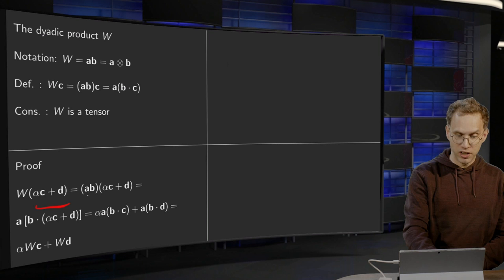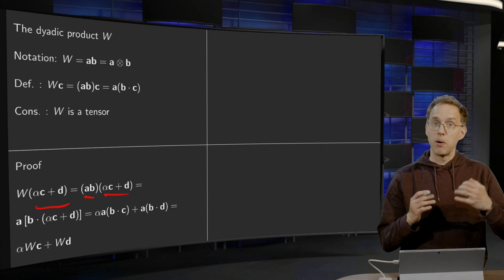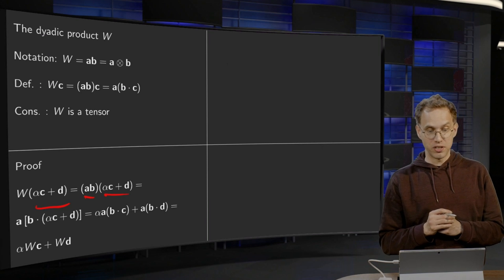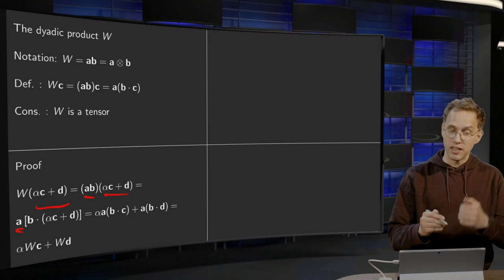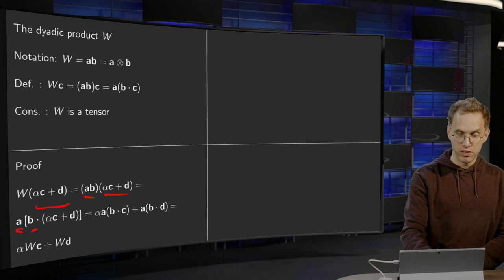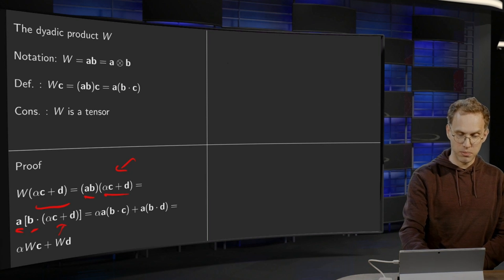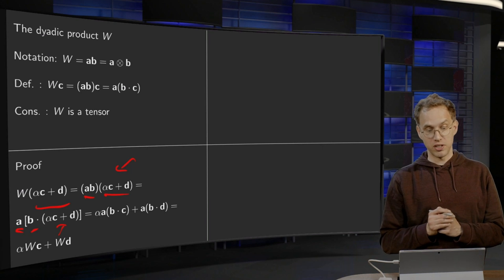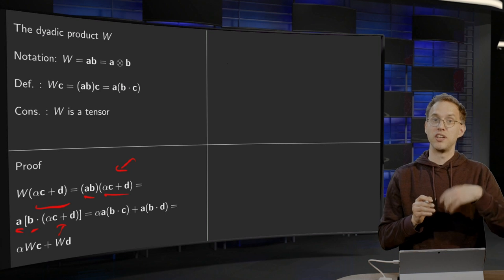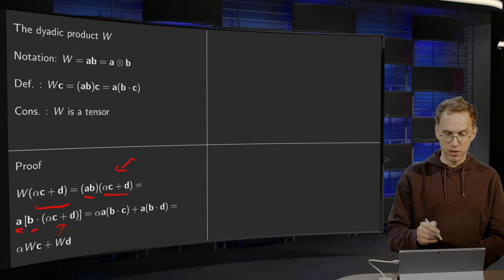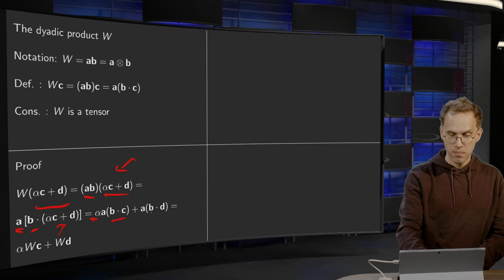Now, we have by definition that W equals AB B times alpha C plus D. So, how is our dyadic product defined? Well, what you do is you just leave your A and you take the inner product of your B with what is on the right side of that, so with alpha times C plus D. Now, your inner product is linear, so B inner product alpha C plus D is just alpha times B inner product C plus B inner product D. So, that is what we get here, alpha times B inner product C plus B inner product D.